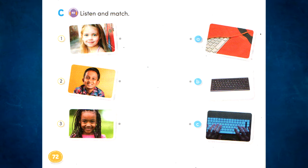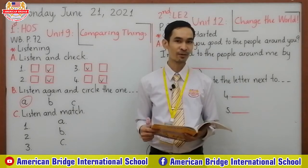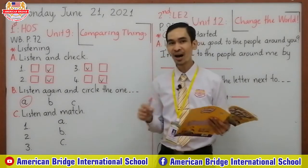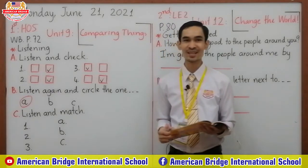C: Listen and match. Number one: I want a bright keyboard. The blue keyboard is the brightest. Number two: I want a cheap keyboard. The black keyboard is very cheap — it's the cheapest. Number three: I want a tiny keyboard. The white keyboard is the tiniest. I can carry it in my jacket. Finish, everyone. Good job. Can you match all? Good. I hope your answers are correct.